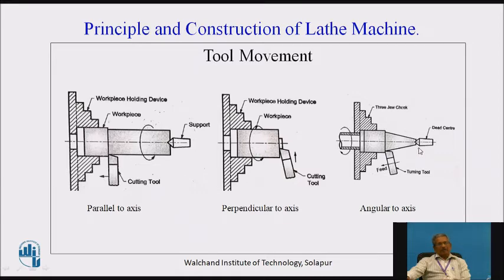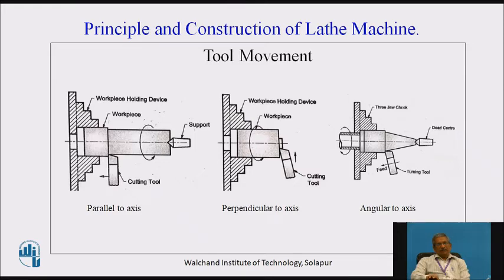In taper turning, the tool travel is angular to the axis of the lathe or workpiece. This generates a conical surface. The shape produced depends on whether the tool moves perpendicular, angular, or parallel to the axis of the workpiece.